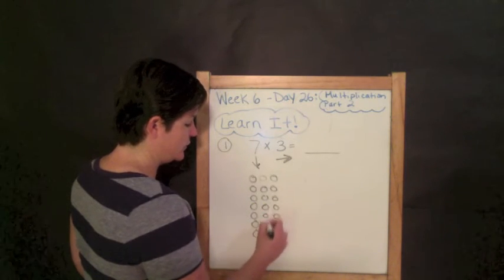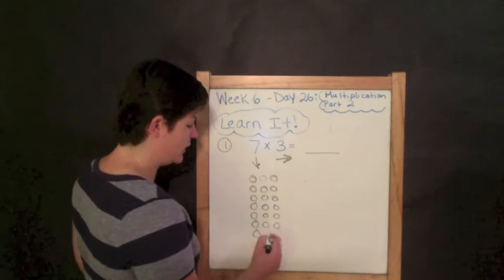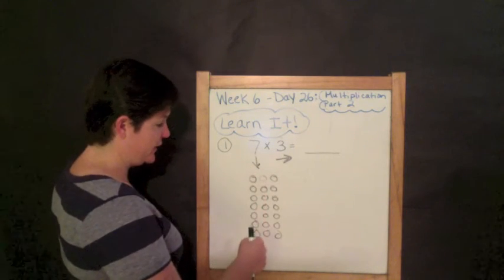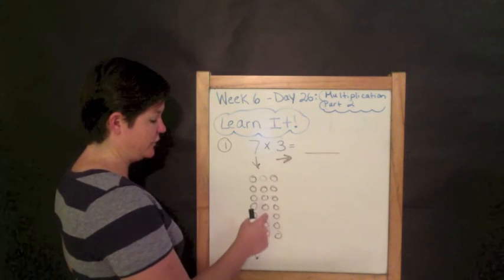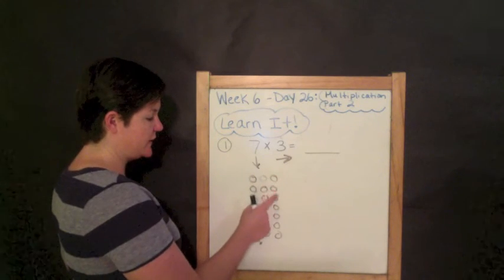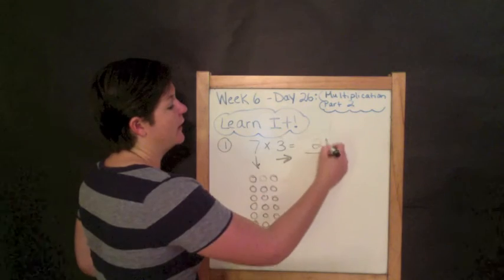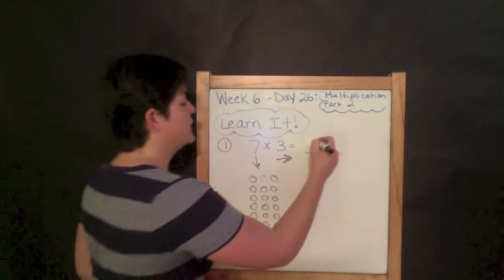When I count these up I have seven, eight, nine, ten, eleven, twelve, thirteen, fourteen, fifteen, sixteen, seventeen, eighteen, nineteen, twenty, twenty-one. A product or a total of 21.